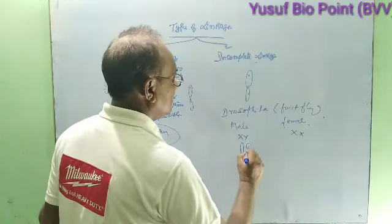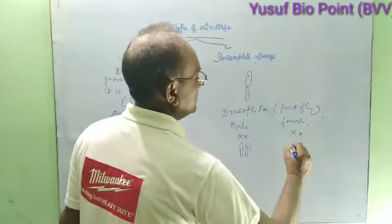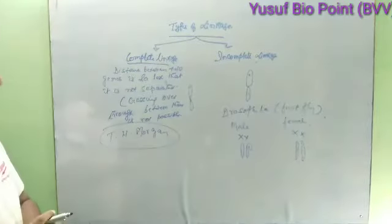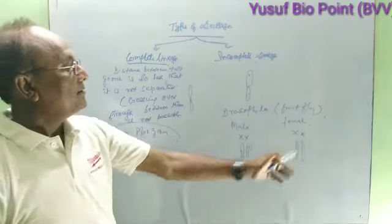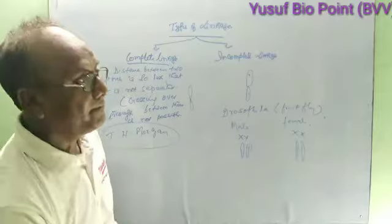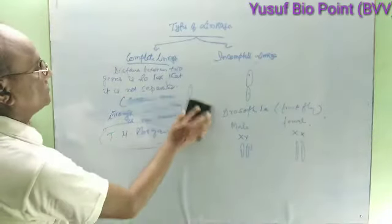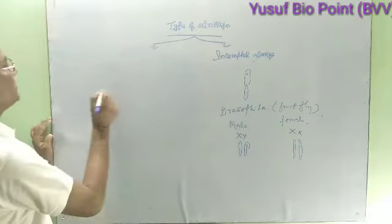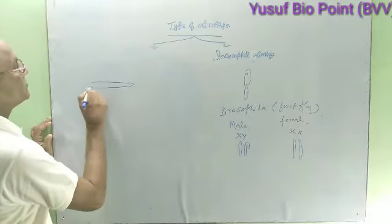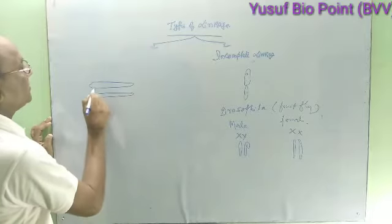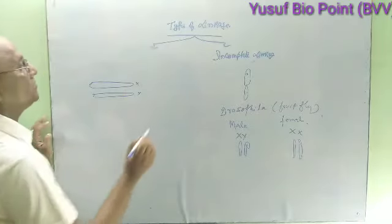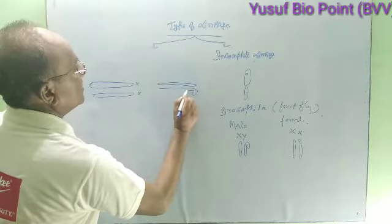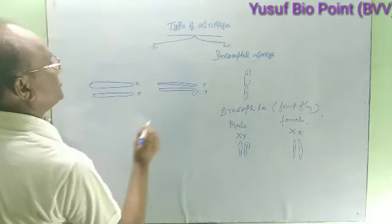In Drosophila, this is the X chromosome and this is the Y chromosome. Male have X-Y chromosomes and female have X-X chromosomes. Now we cross between them to see what happens.